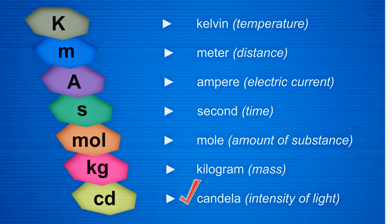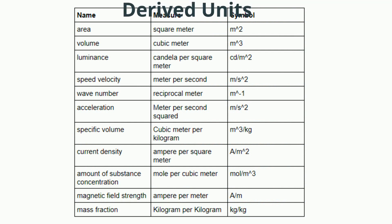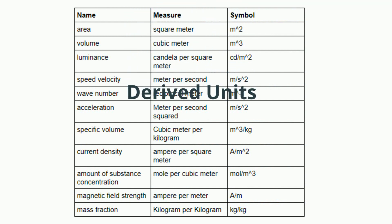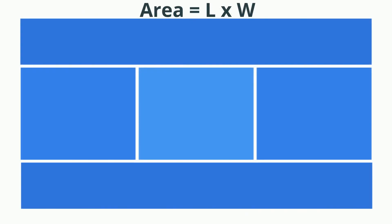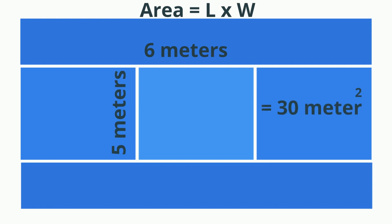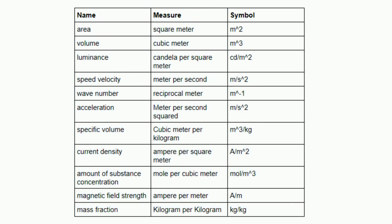The next units are called derived units because they use the base units in a formula. For example, the unit for area is a derived unit. In order to calculate area, you multiply length times width, so the unit is a square meter — it uses a base unit in a formula. Here is a partial list of derived units. There are 22 derived units.